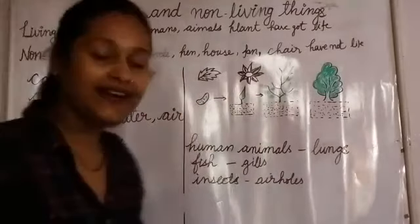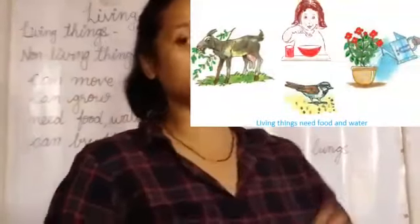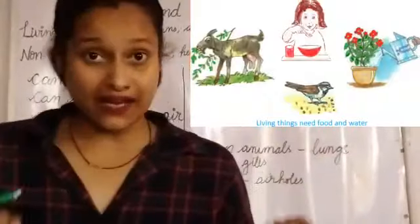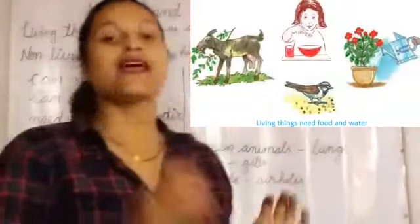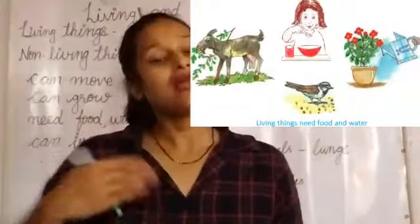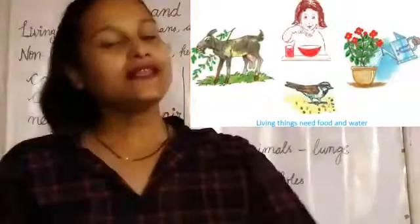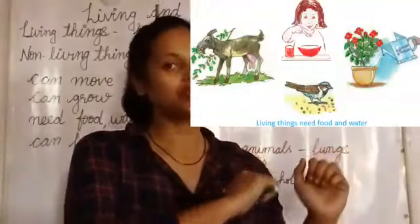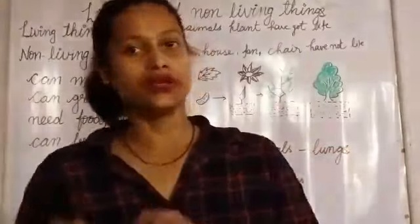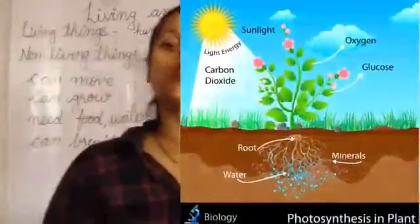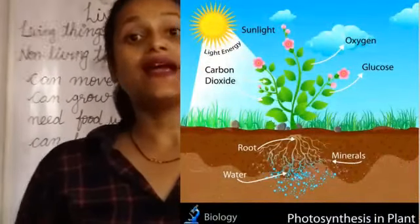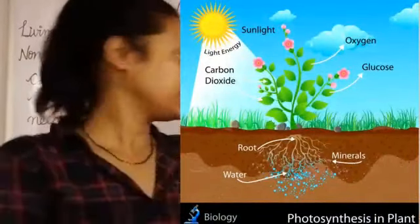Next, living things need food, water and air. All living things need food, water and air. Human beings and animals depend on plants to get food. Plants make their own food in the presence of sunlight, water and air.